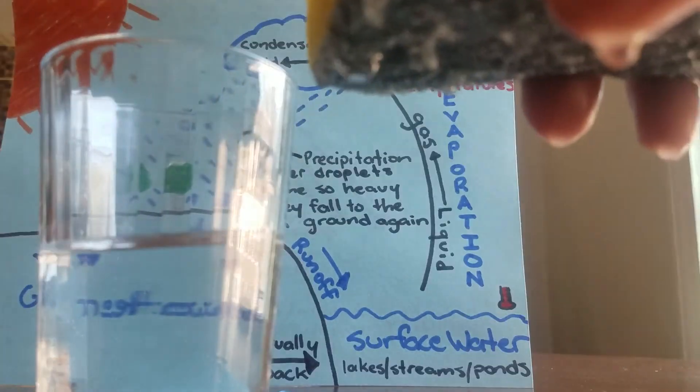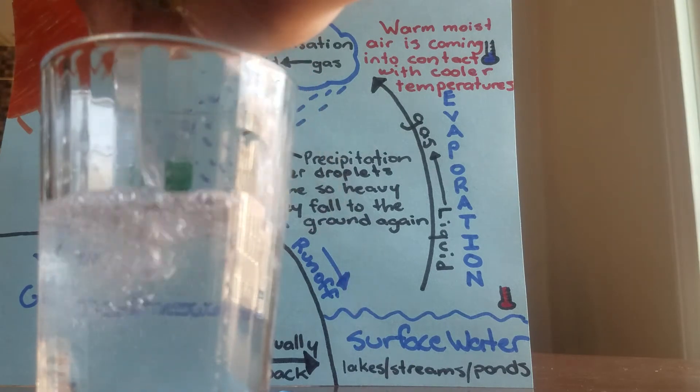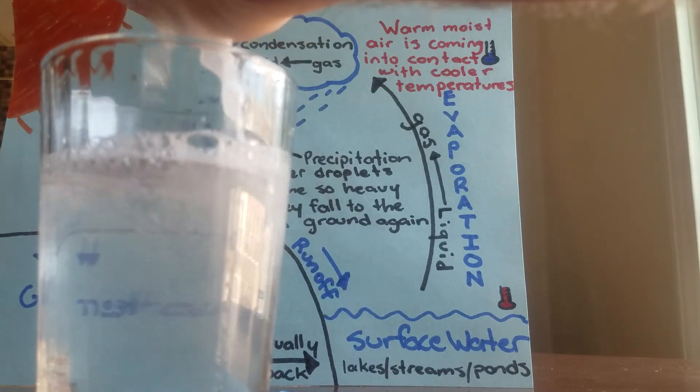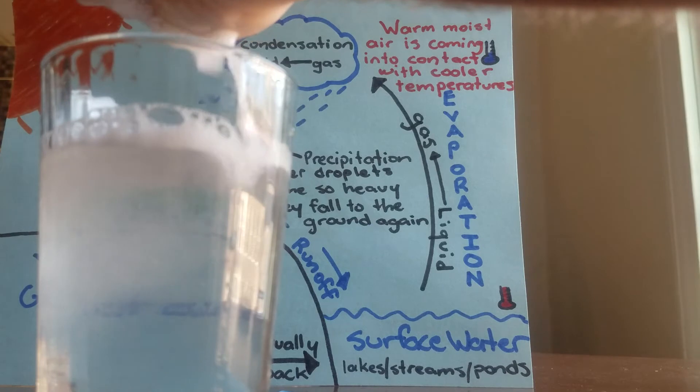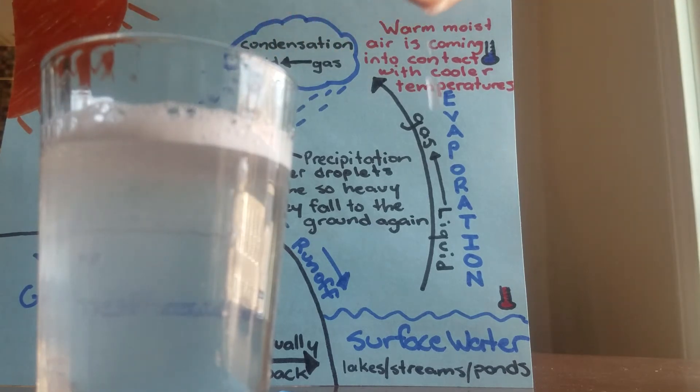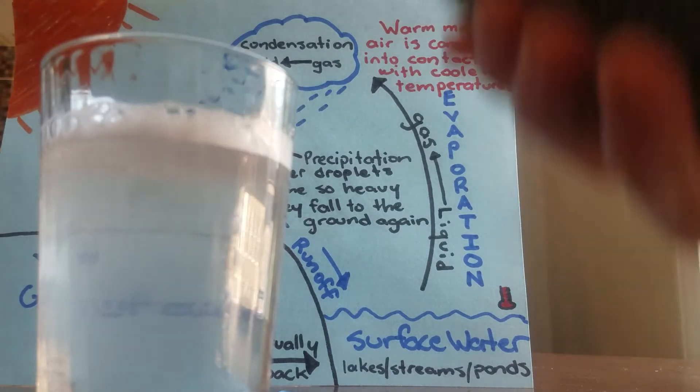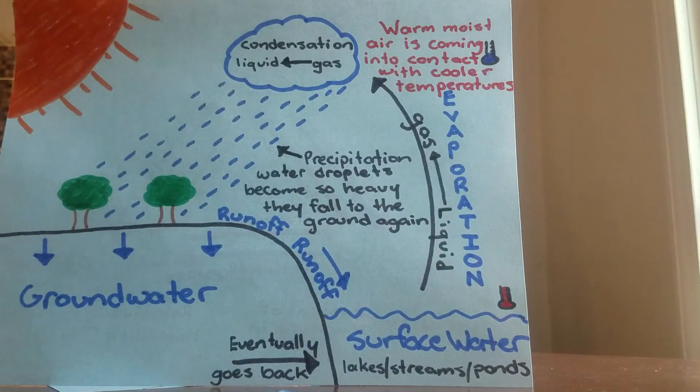So this sponge is fully saturated, it can't hold any more water. If I squeeze it out, now I can hold as much water as it had before. At a certain point, the ground can't hold any more water. It's been totally saturated like a sponge. I could fill this back up and do the exact same thing.